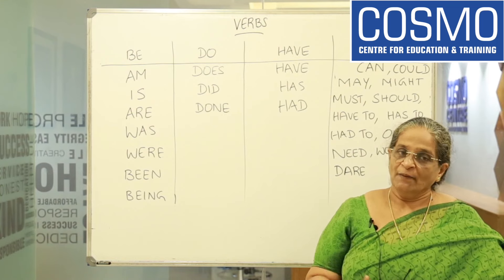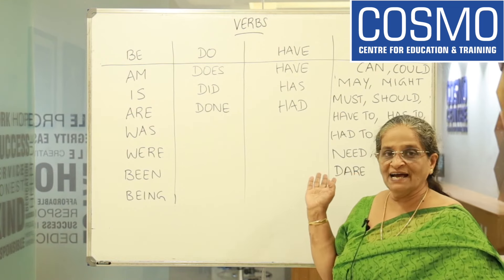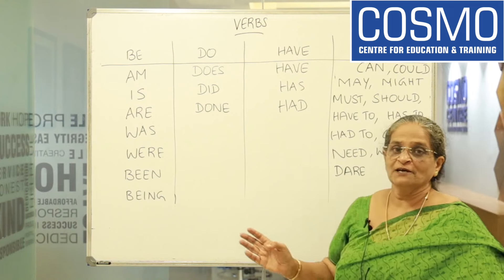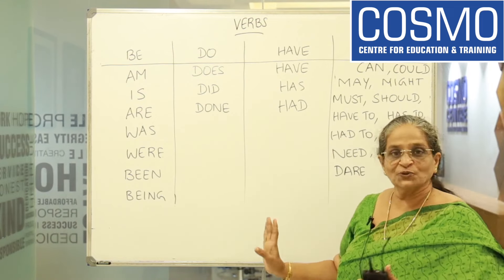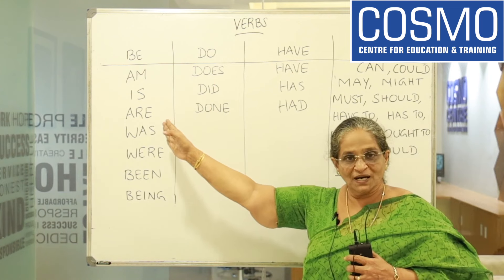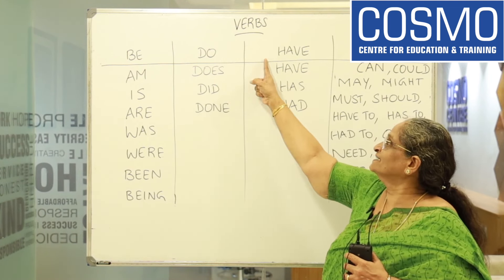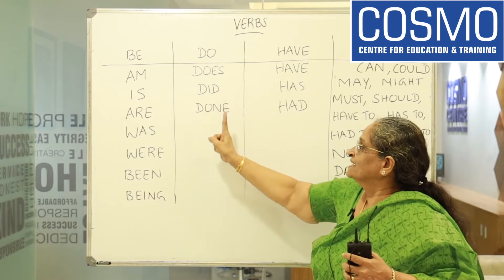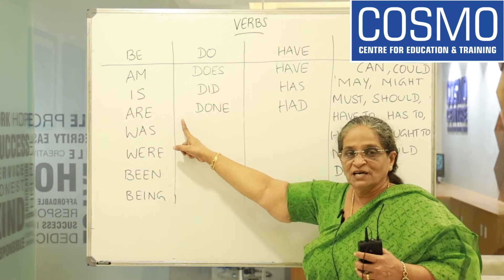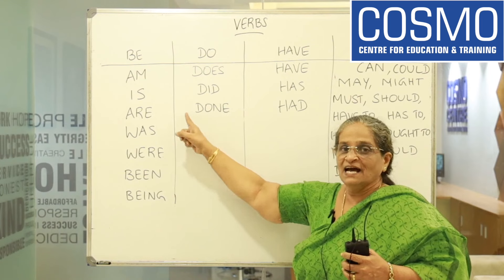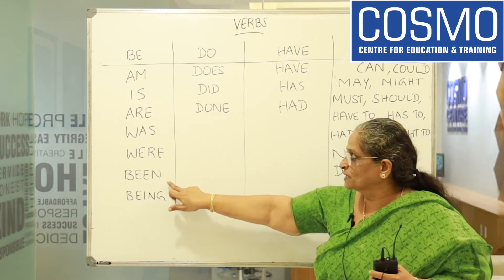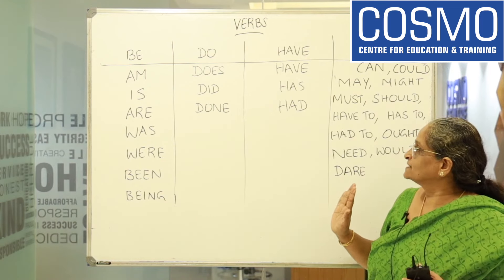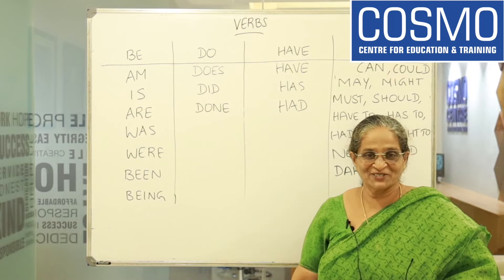WILL, WOULD, SHALL, SHOULD, CAN, COULD, MAY, MIGHT — these are all modals. I have given you a rough picture of these verb forms. Remember: modals don't change for singular or plural. BE, DO, and HAVE change for singular, plural, and past, but you keep the past participle with HAVE or HAS or HAD. Okay, that's all for today. Thank you.